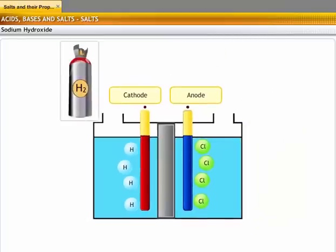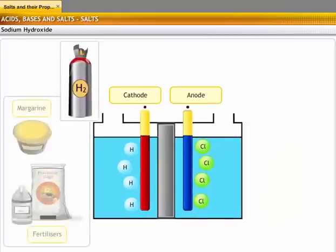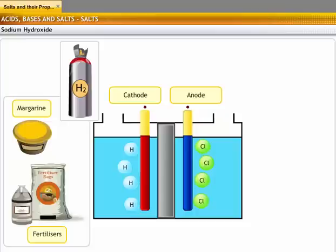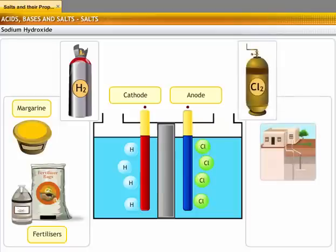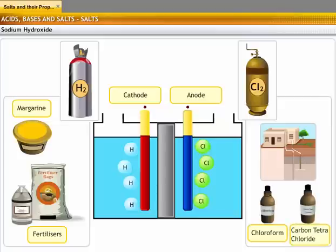The hydrogen formed in this process is used to manufacture fuels, margarine and ammonia for fertilizers. Chlorine is used for water treatment in swimming pools to manufacture chlorofluorocarbons, PVC, chemical compounds like chloroform, carbon tetrachloride, disinfectants and pesticides.